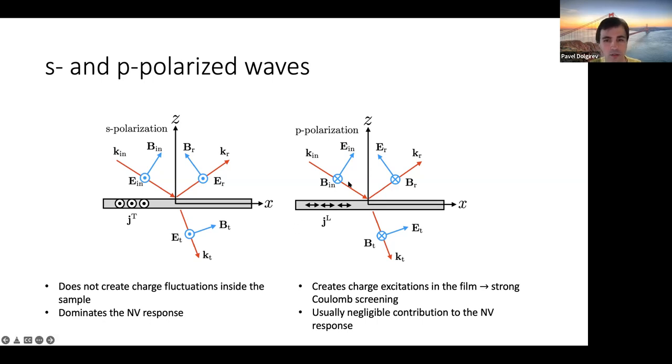In contrast, you can envision a situation like here, where electric field points here. And now the divergence of electric field in this sample is no longer zero. So you create charge fluctuations. But inside the sample, you have strong Coulomb forces. So those strong Coulomb forces are very much suppressing fluctuations and making them actually not relevant, at least in metals.